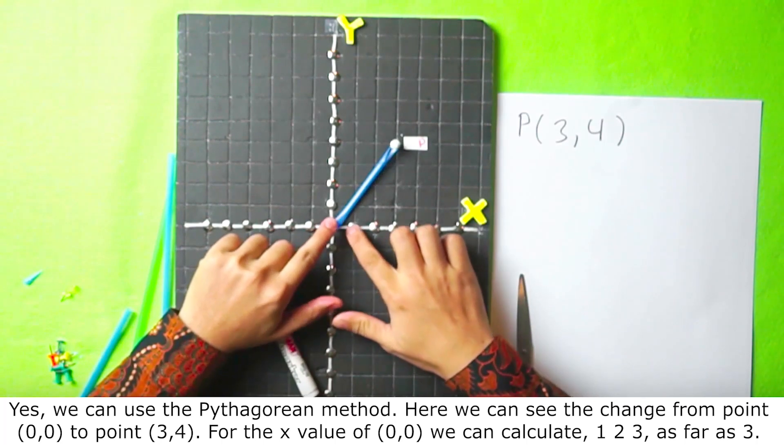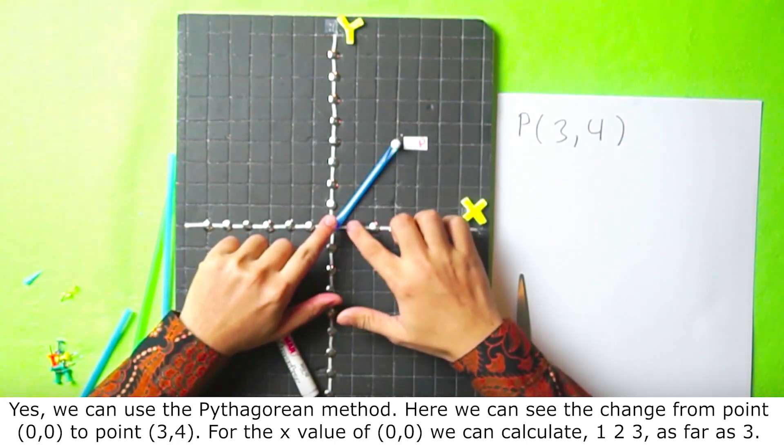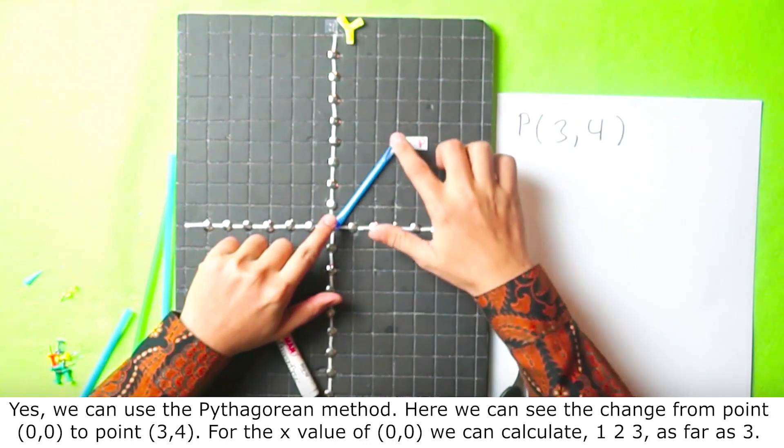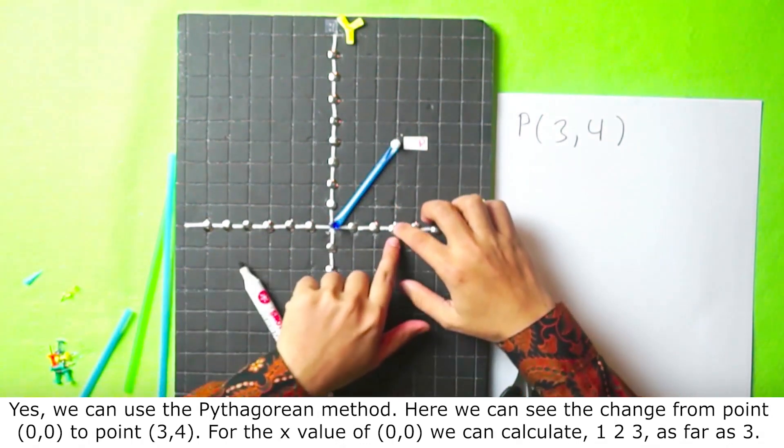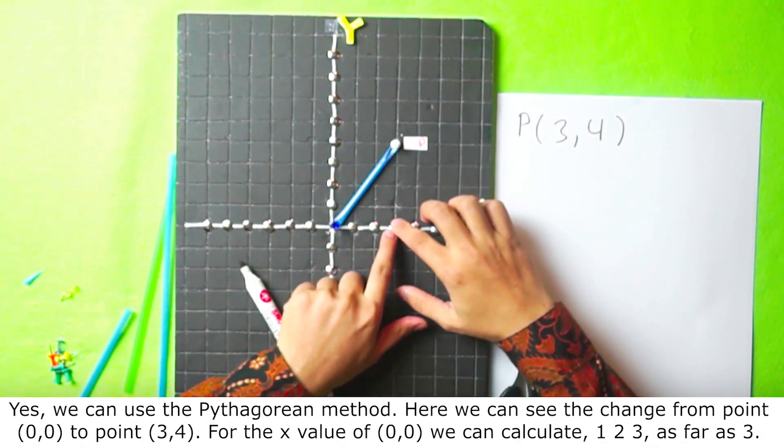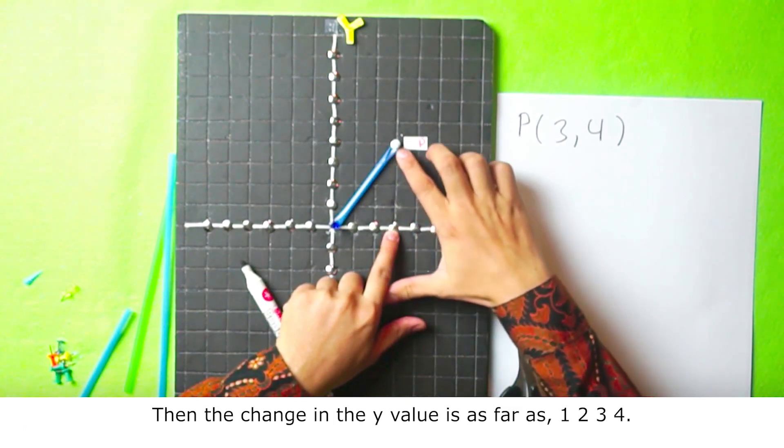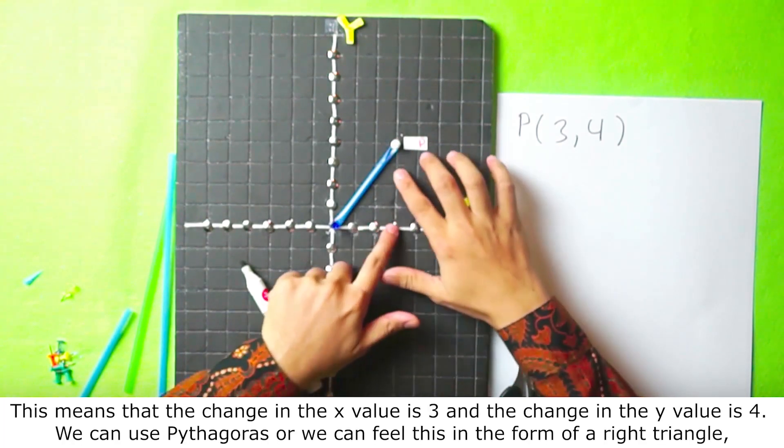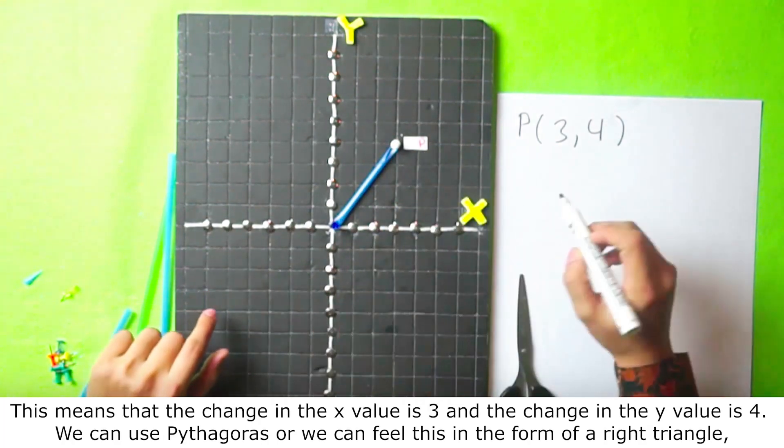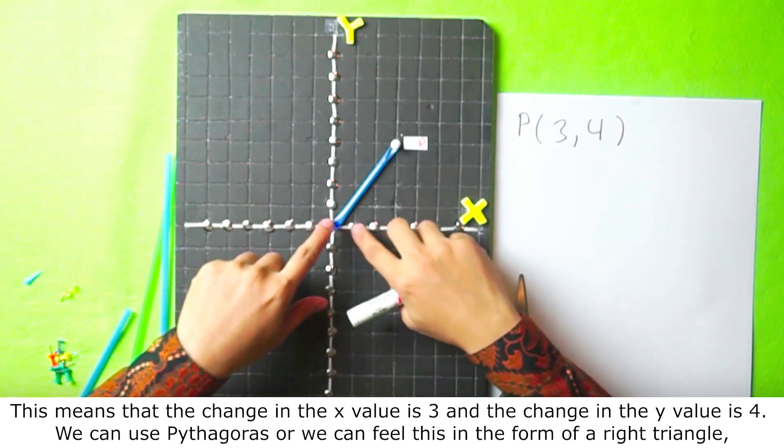For the x value of 0, 0, we can calculate 1, 2, 3 as far as 3. Then the change in the y value is as far as 1, 2, 3, 4. This means that the change in the x value is 3 and the change in the y value is 4.